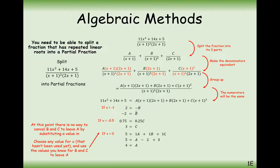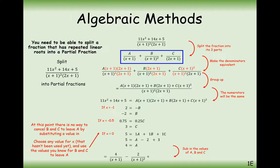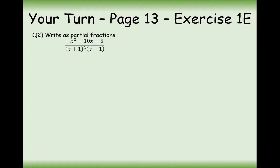This will always happen when you've got a repeated factor — you have to use some easy value of x to work out the remaining constant using your previously found values. So the final answer is 4/(x+1) minus 2/(x+1)² plus 3/(2x+1). That's the answer to this question. Now it's your turn — pause the video and have a go at this one.